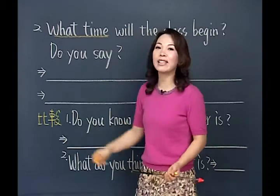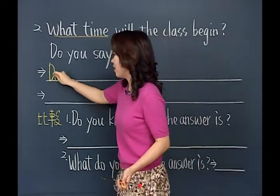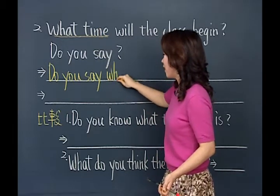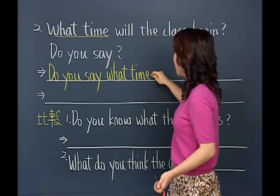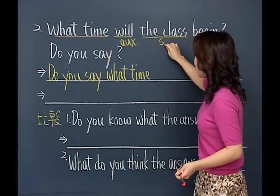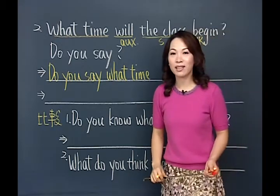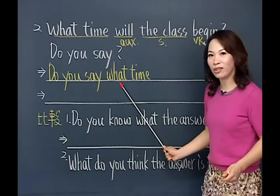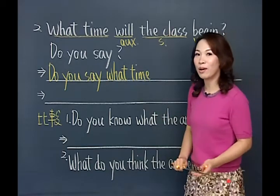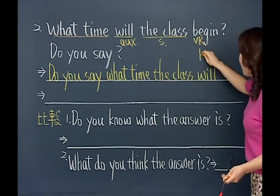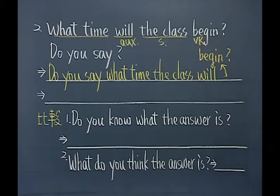B动词在这里，B动词加上主词加上原形动词。这个例句的疑问词What time拿到句中来之后，一定要先看到主词，所以主词跟助动词要换位置：What time the class will begin。前面Do you say，后面跟问号：Do you say what time the class will begin？同样的，这句话还是错的。